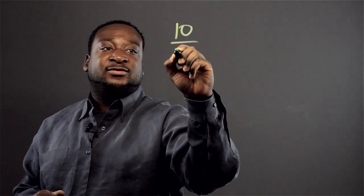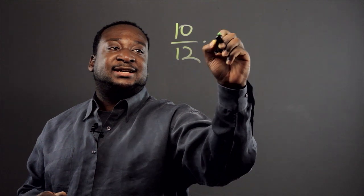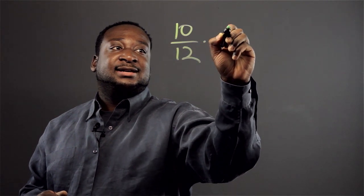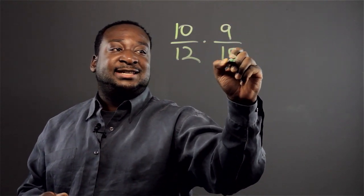Hi, my name is Stefan. Today I'm going to be speaking on how to cross simplify. Let's say we have the product of two fractions. We have 10 over 12 and we're multiplying this times 9 over 15.